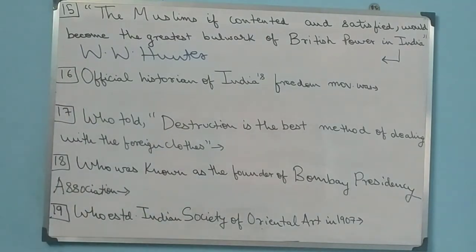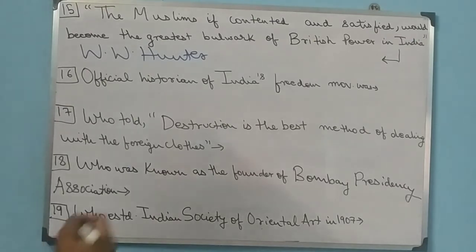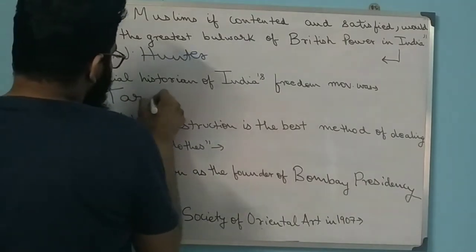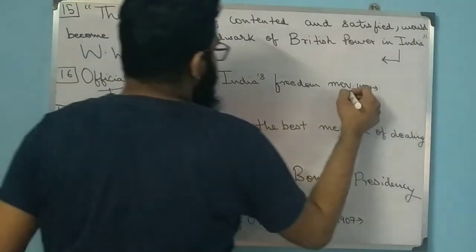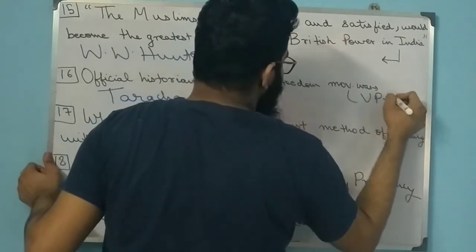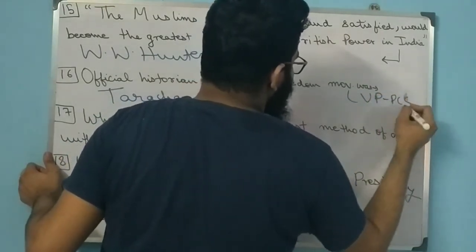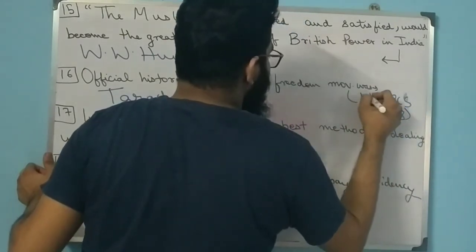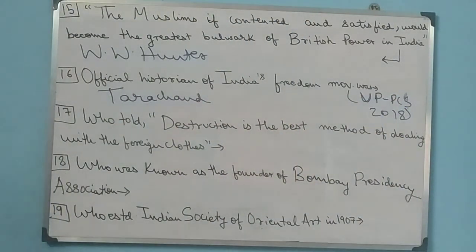Question 16: Who is the official historian of India's freedom movement? The answer is Tara Chand. This is a very important question - it appeared in UPPCS 2018, Uttar Pradesh's PCS exam. Different periods have different official historians - medieval has a different one, and for the freedom movement it is Tara Chand.